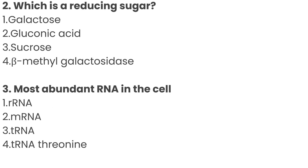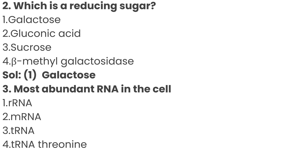Question number 2: which is a reducing sugar? Option 1: Galactose, Option 2: Gluconic Acid, Option 3: Sucrose, Option 4: Beta Methyl Galactosidase. The correct answer is Option 1: Galactose is a reducing sugar.